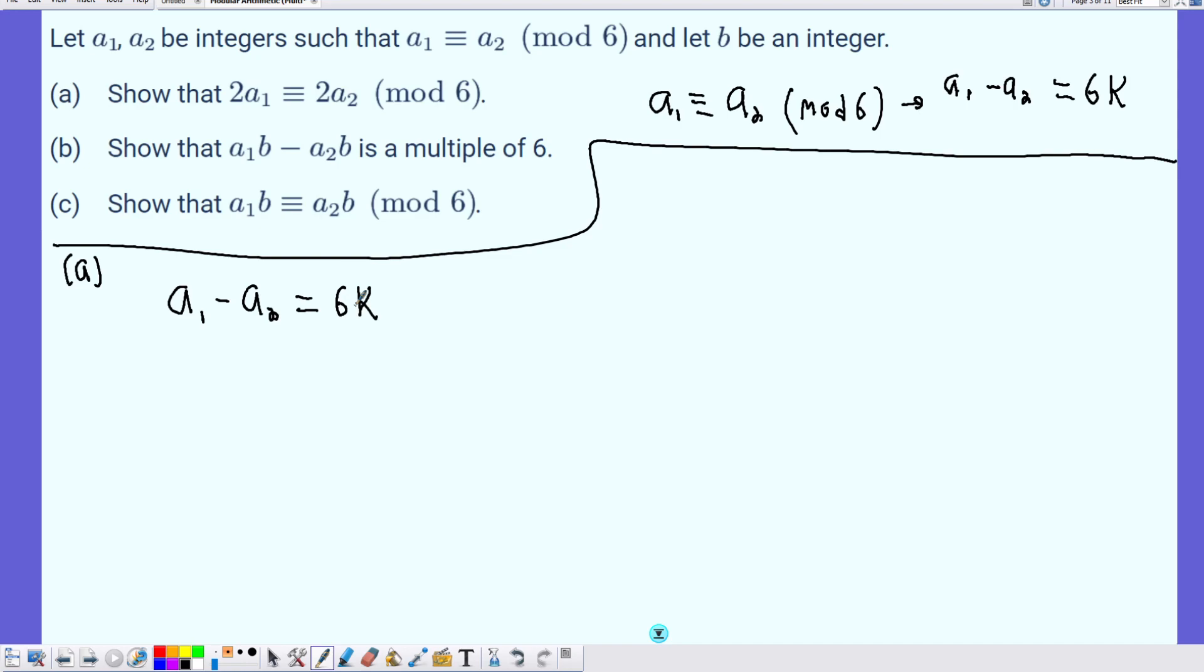How can we approach this problem? In order to show that this is true, what I need to do is change the A1 and A2 so that it's 2 times A1 and 2 times A2. And if I can show that that is a multiple of 6, then I have congruence as well.